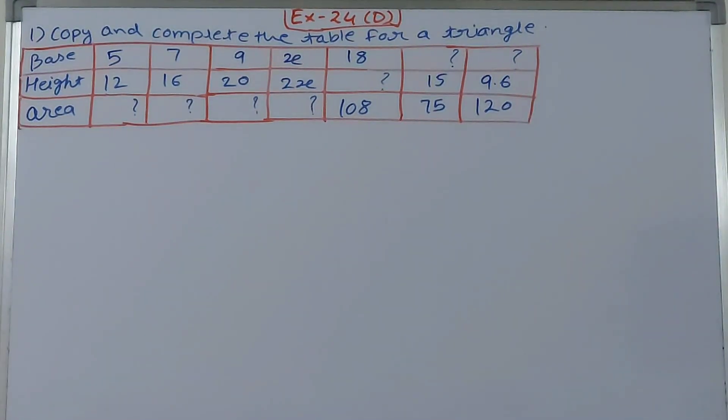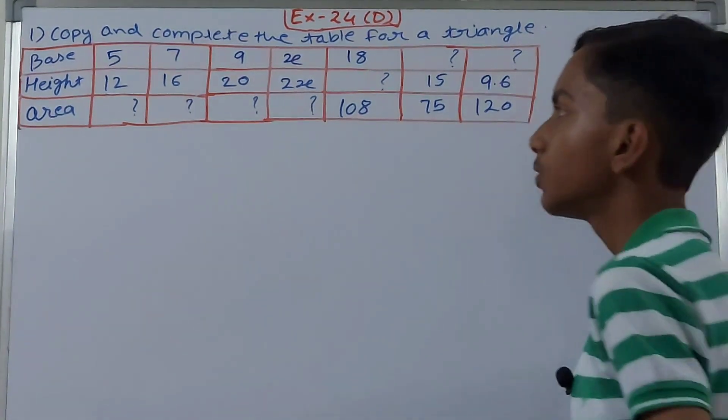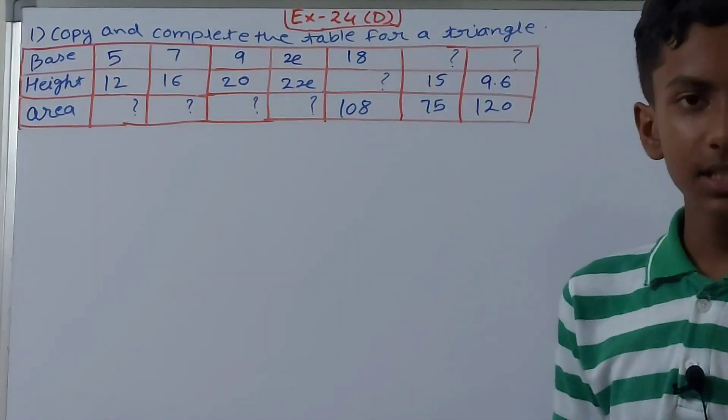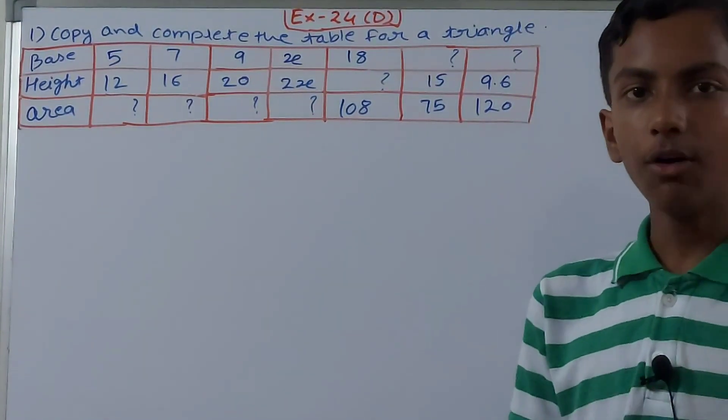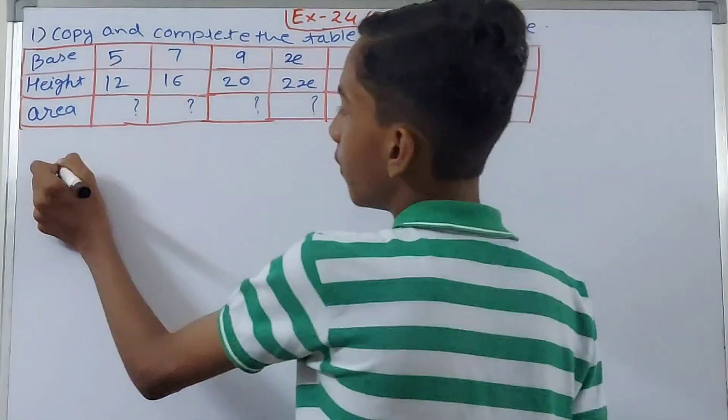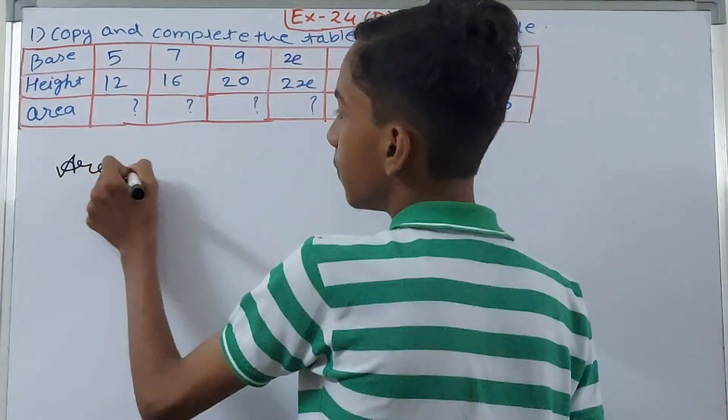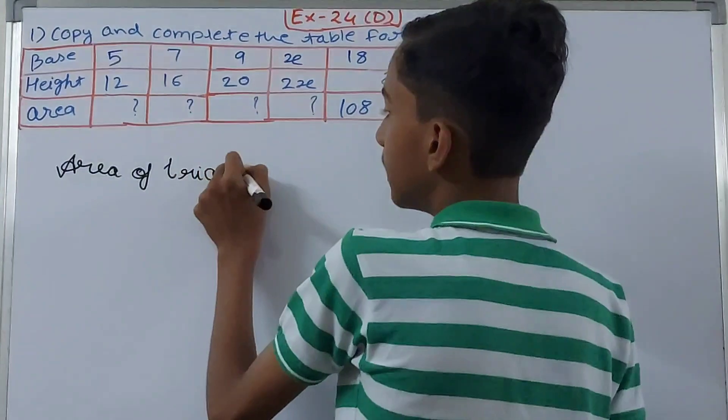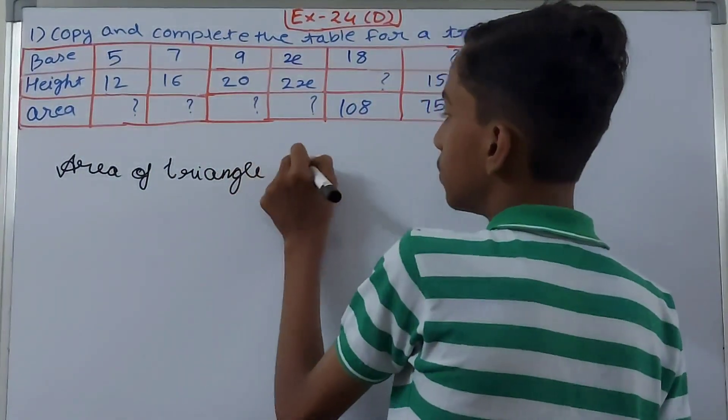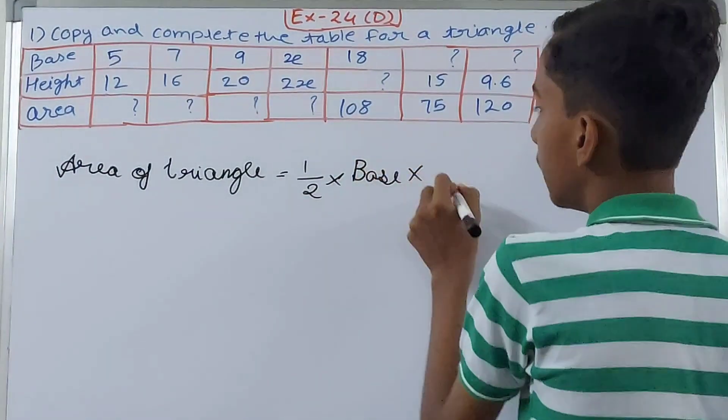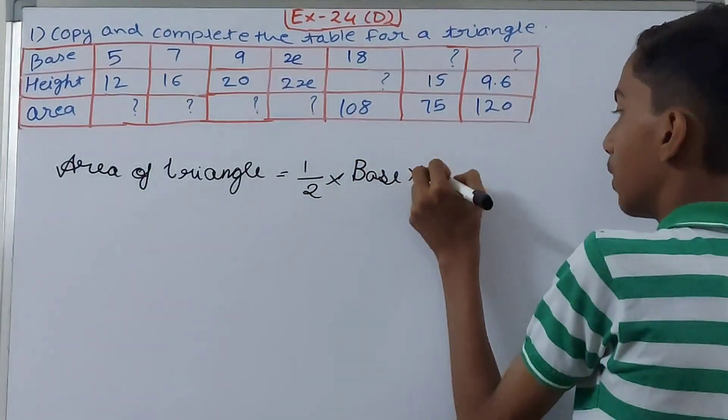We need to complete the table for a triangle. To find the area of the triangle, keep this formula in mind: Area of triangle equals 1/2 into base into height.